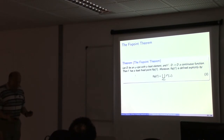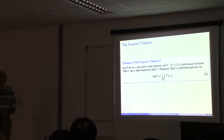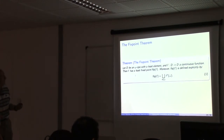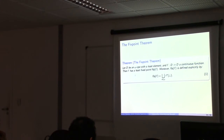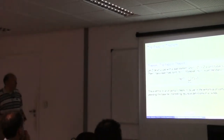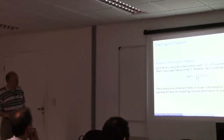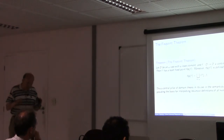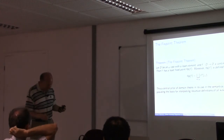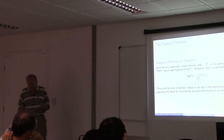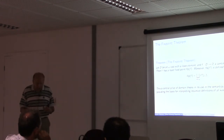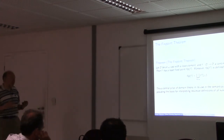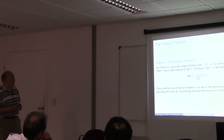Another beautiful result from this analysis is a very general way of understanding recursion. We can analyze recursion through the fixed point theorem: once we have continuous functions, we always have least fixed points which give us the canonical semantics for recursion. This has been a very powerful tool in giving the semantics of programming languages, providing the basis for interpreting recursive definitions of all kinds — a beautiful story originally developed by Yershov and decisively by Dana Scott, leading to denotational semantics.